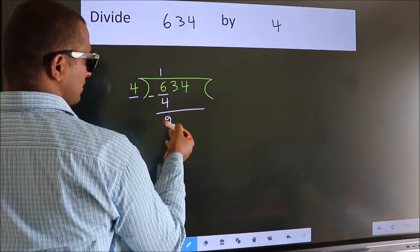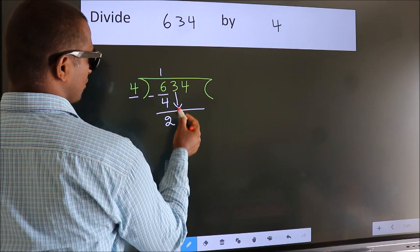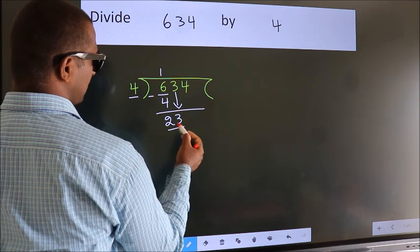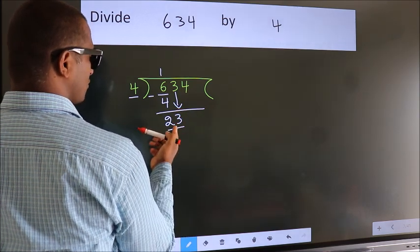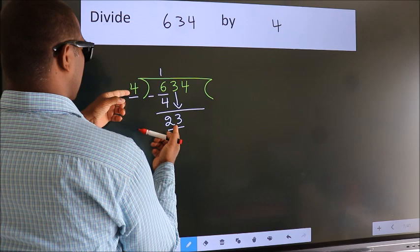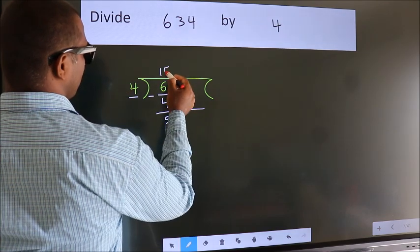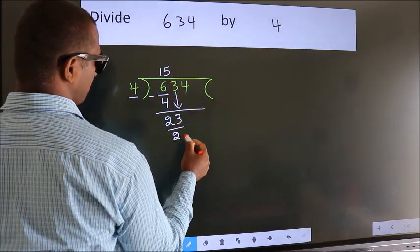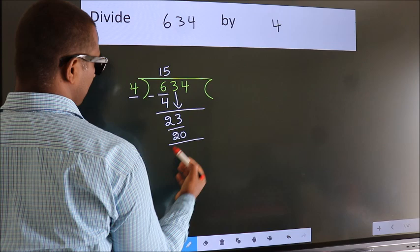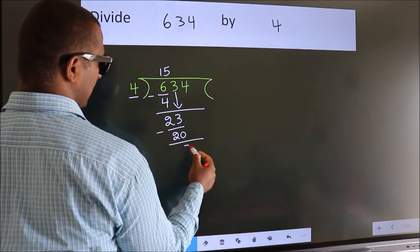After this, bring down the beside number, so 3 down. So 23. A number close to 23 in the 4 table is 4 fives, which is 20. Now we subtract. We get 3.